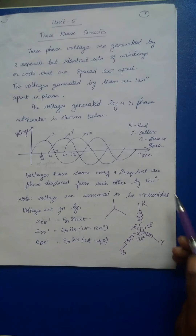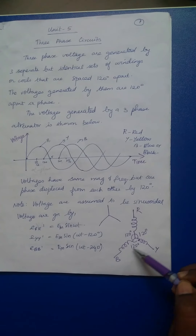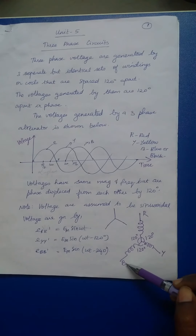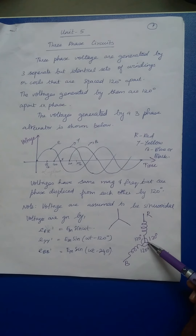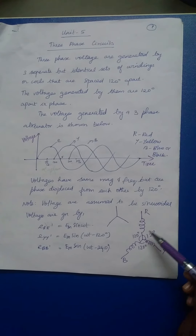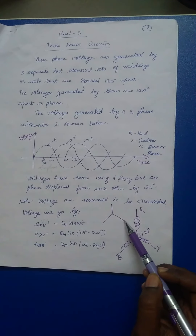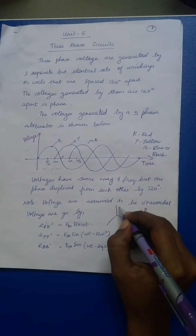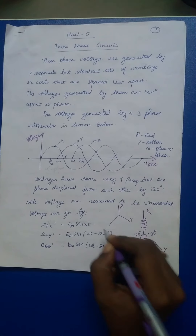Let's see the diagram. I have shown three windings named as R, Y, and B. As you can see in the diagram, they are spaced 120 degrees apart from each other. This is in general the representation for a star-connected network.